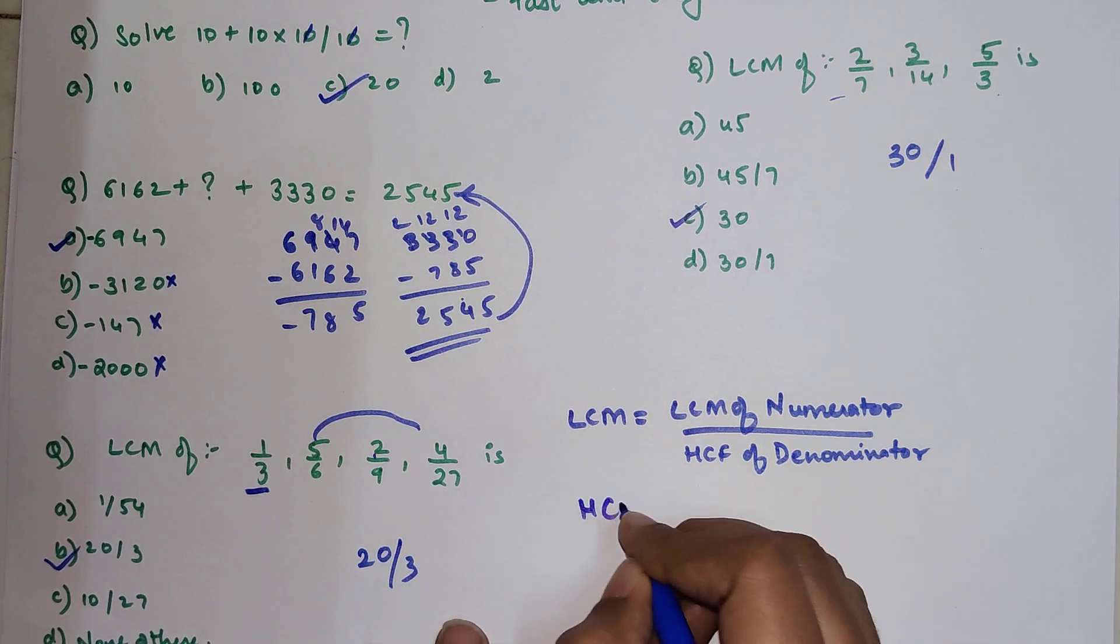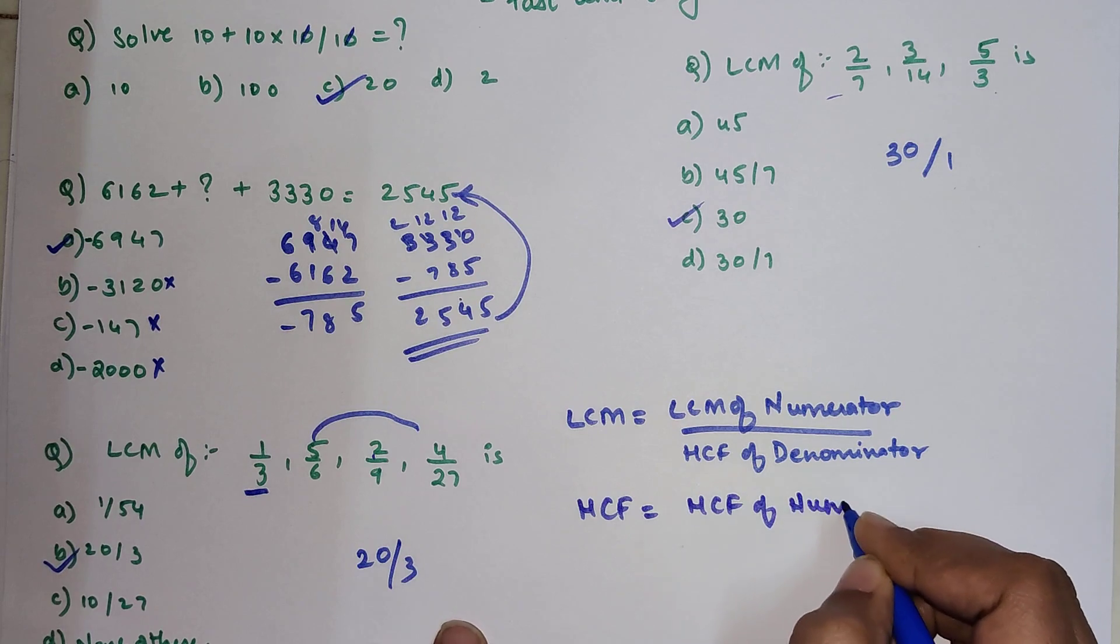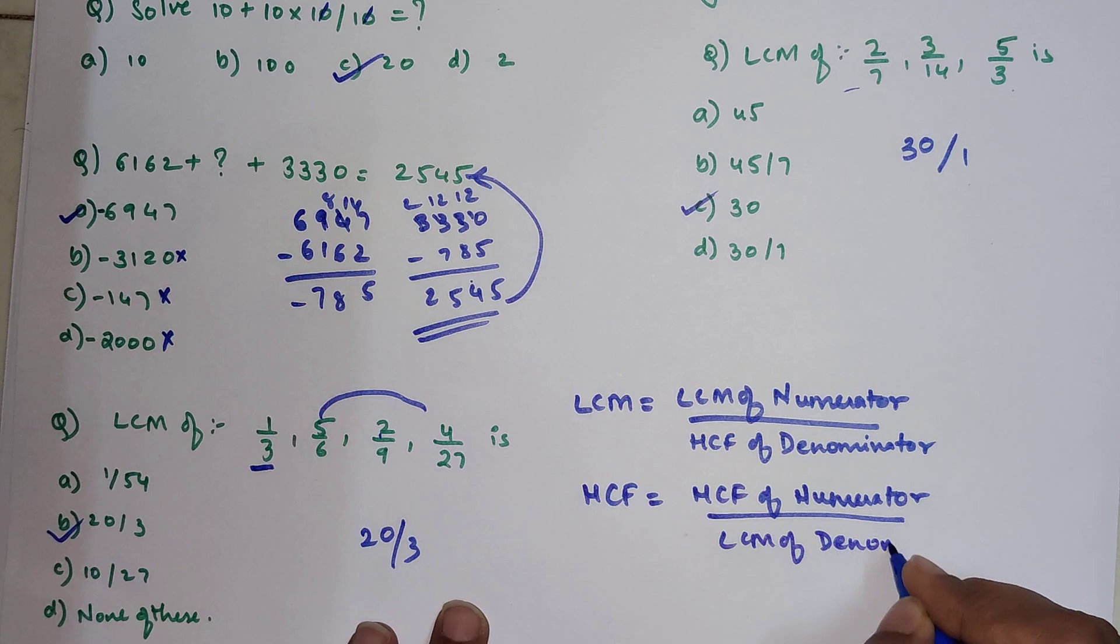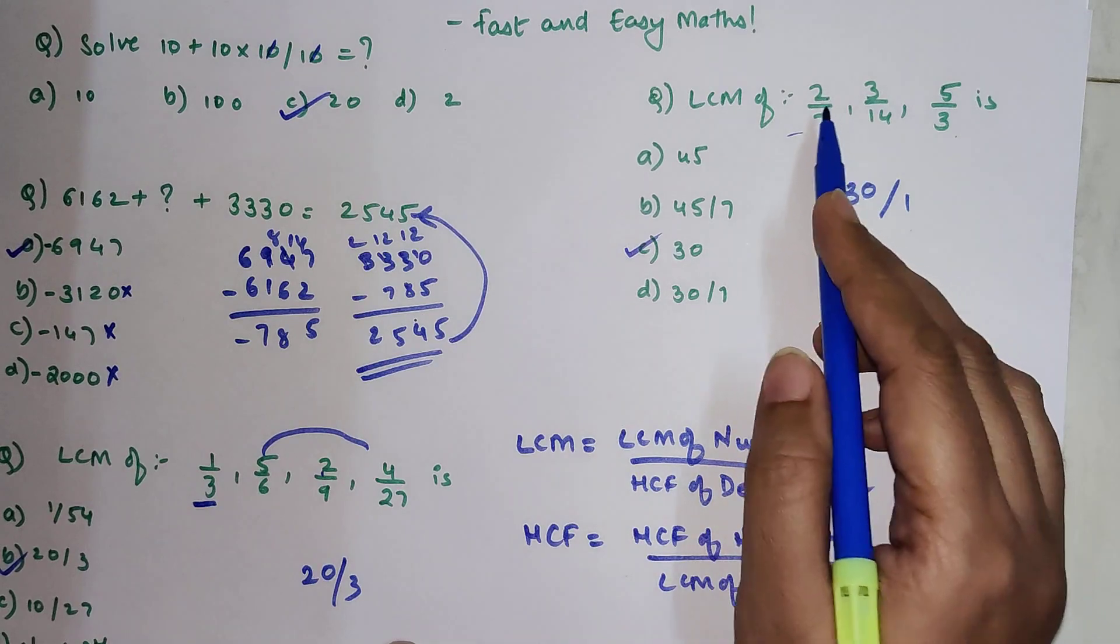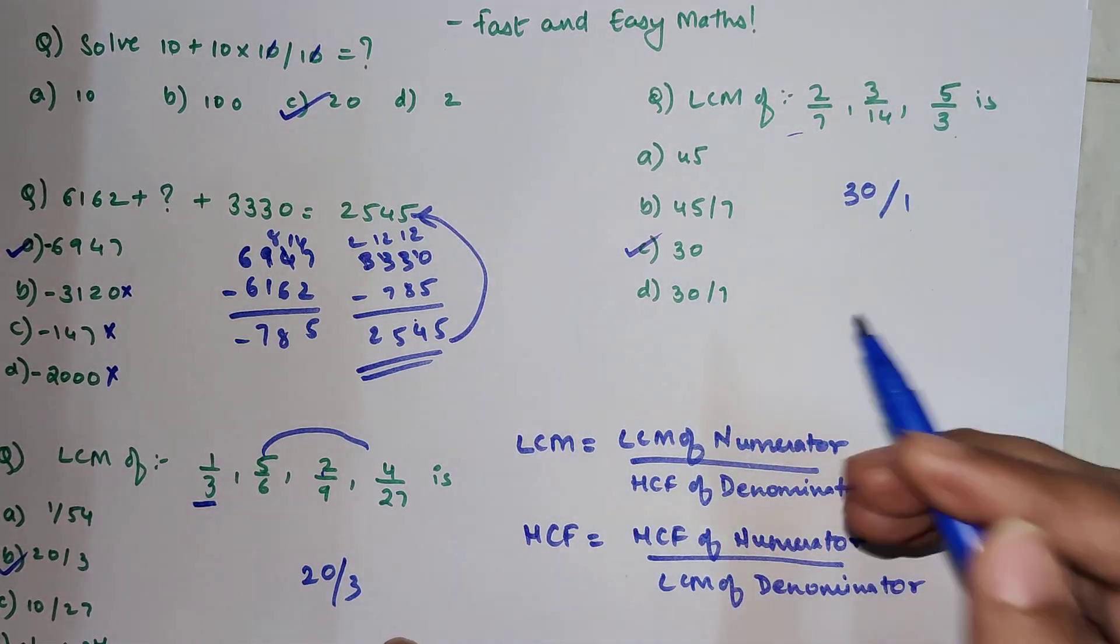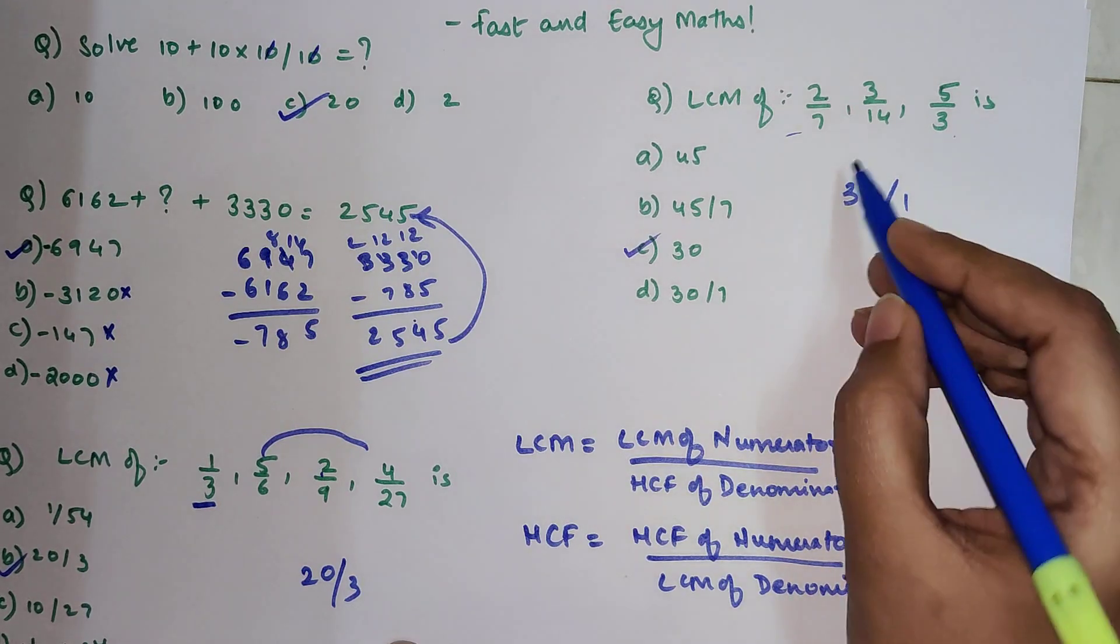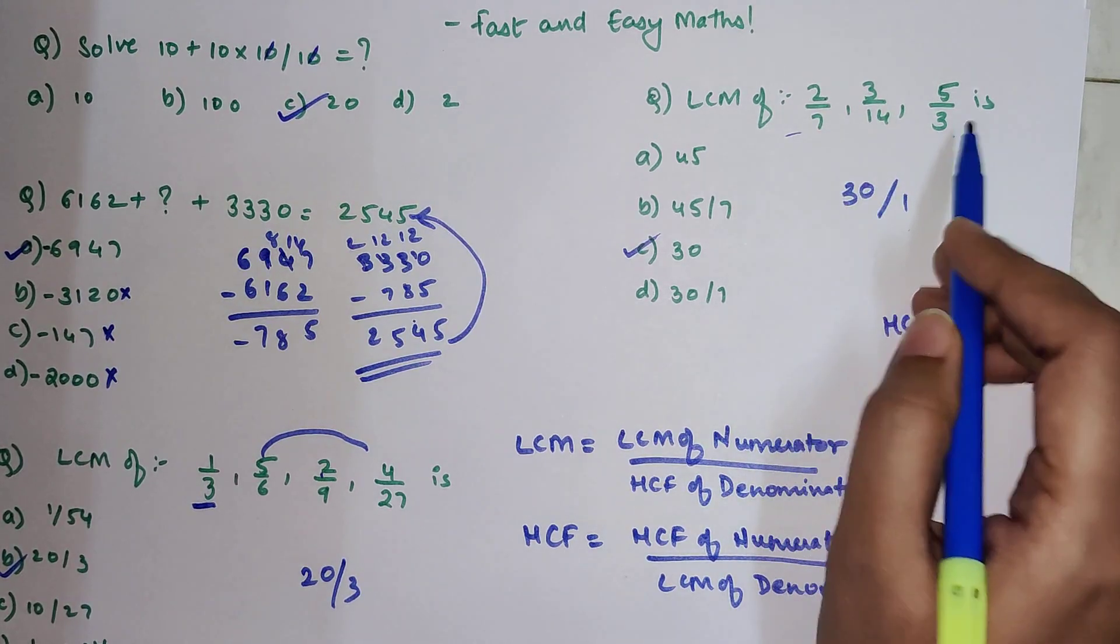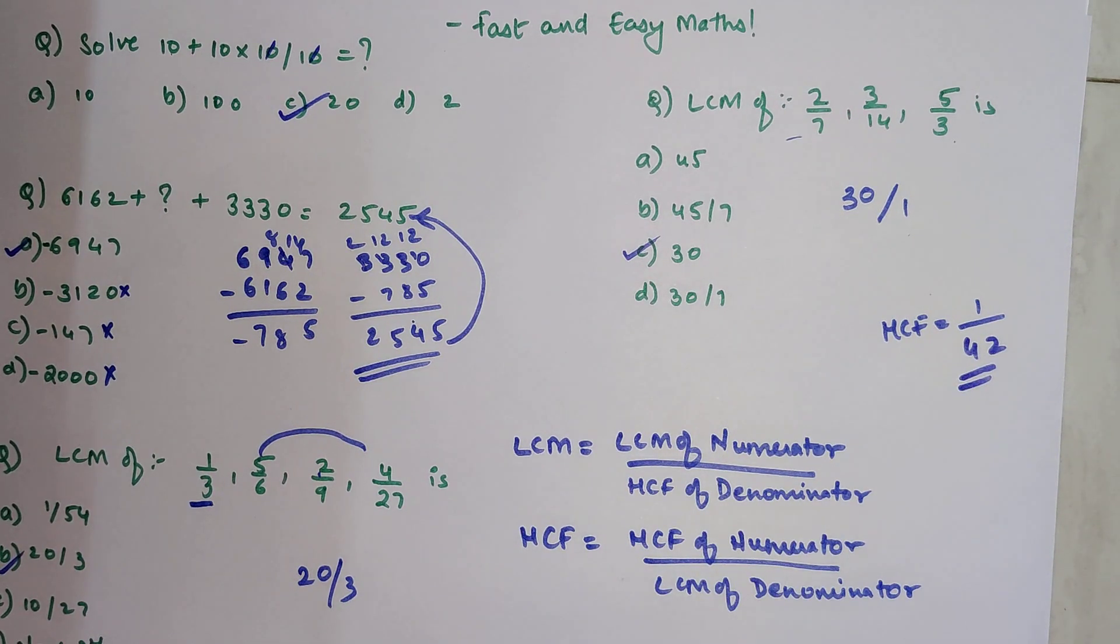HCF is also very simple. You just have to do HCF of numerator, and that should be divided by LCM of denominator. So let's try to find the HCF over here. So again, 2, 3, 5 all are prime, so nothing is common. So in case of HCF, your answer will be 1 divided by 7, 14 and 3. So 14 comes in 7 stable, so we will just multiply 14 and 3. So we get 1 upon 42. That is your answer for this particular question.